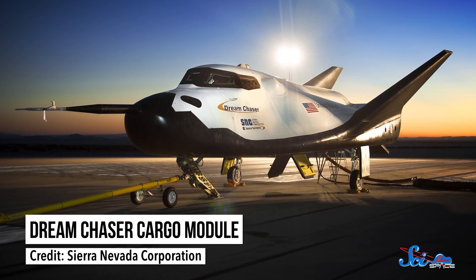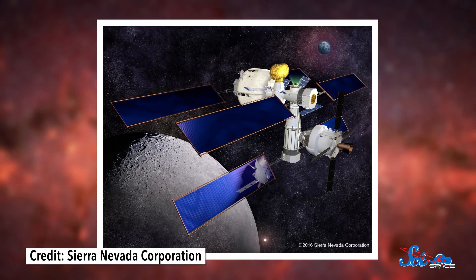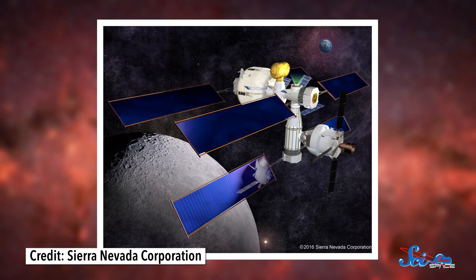Each company will create their own version of a deep space habitat based on technology they're already developing. Sierra Nevada, for example, will base their prototype on their Dream Chaser cargo module and will add life support systems, a propulsion module, and an inflatable room for some extra space.